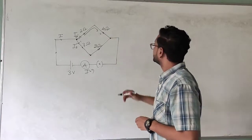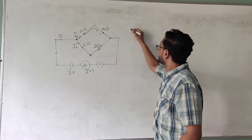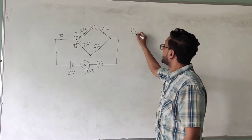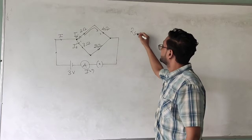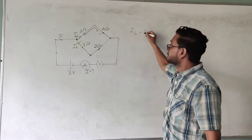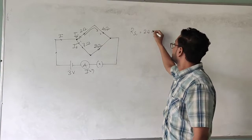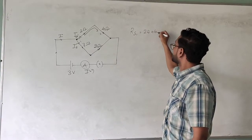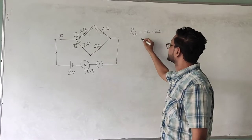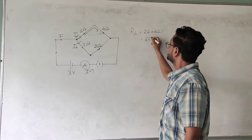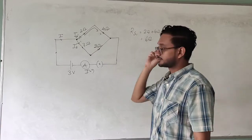So we can write that resistance RS1 is equal to two ohms plus four ohms, which is equal to six ohms.